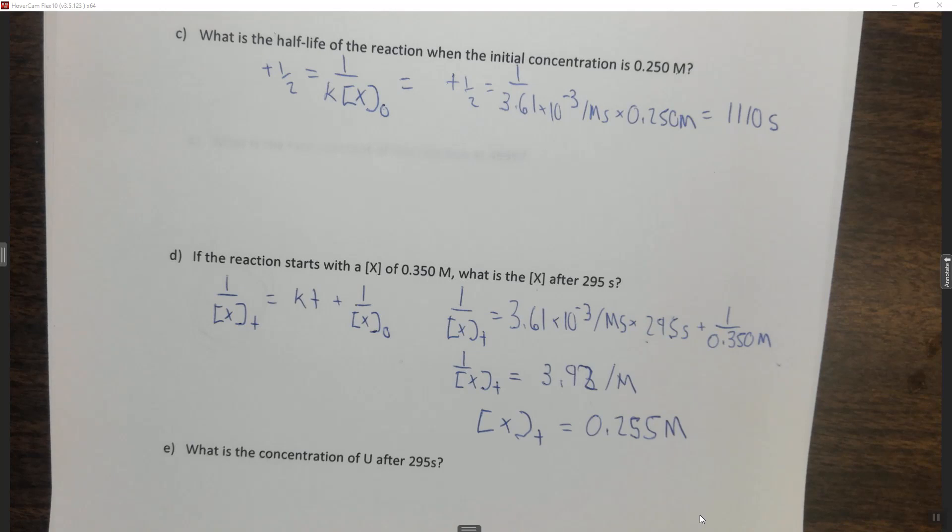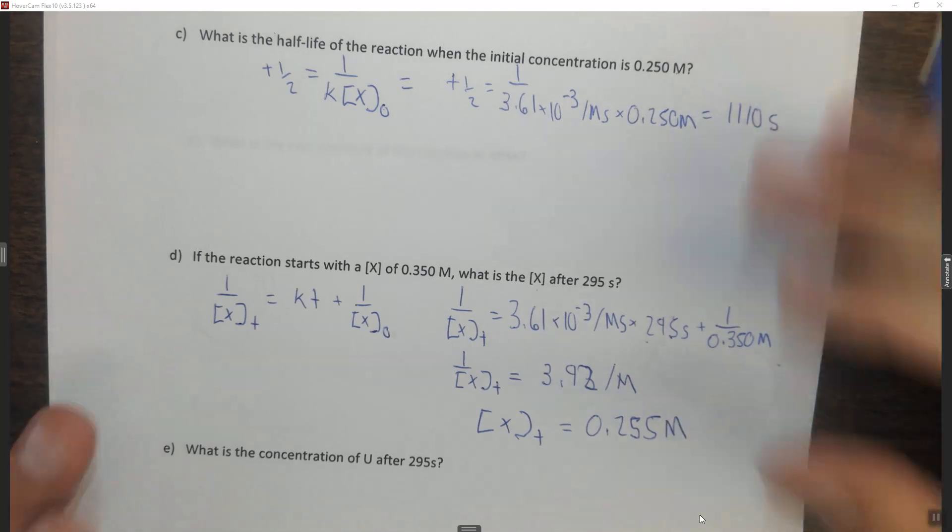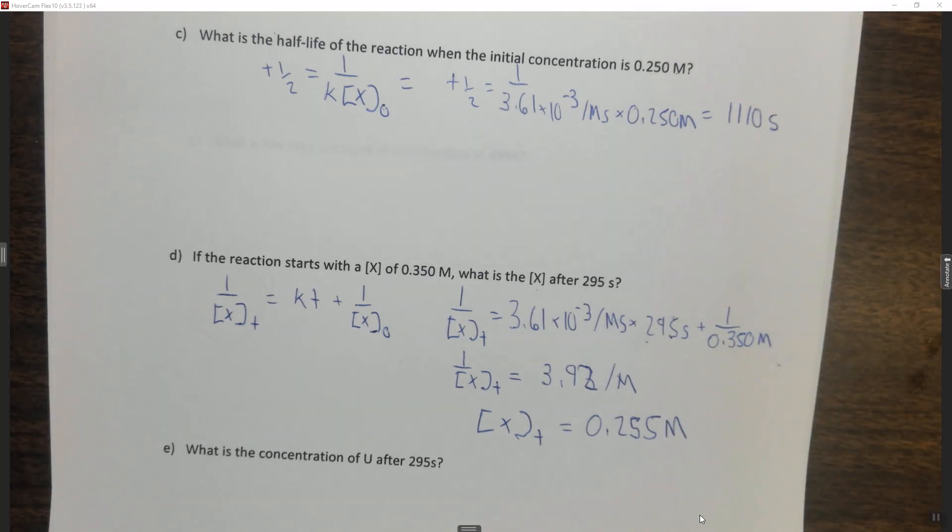So it's important to note that the integrated rate law, in this case the second-order one, allows us to find the concentration of things after a certain amount of time. Or if we know the concentration change we can find out how much time went by. Any of the things can be the variable.